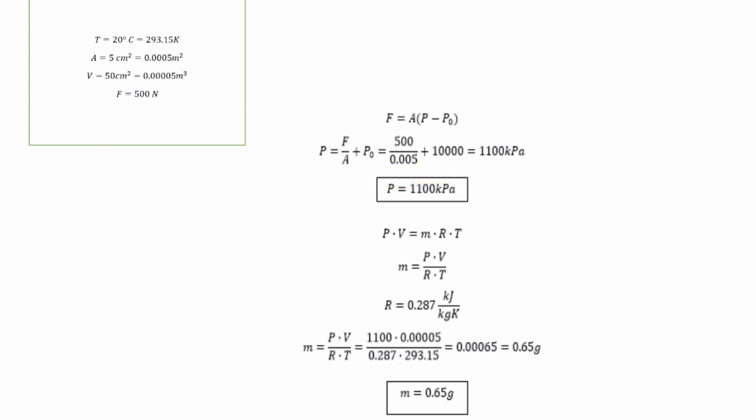P equals F over A plus P0 equals 500 over 0.005 plus 10,000 equals 1100 kPa. So P equals 1100 kPa.